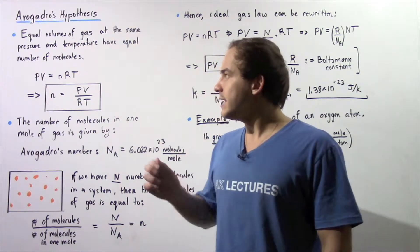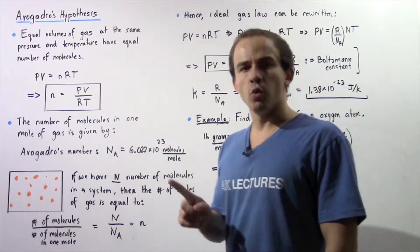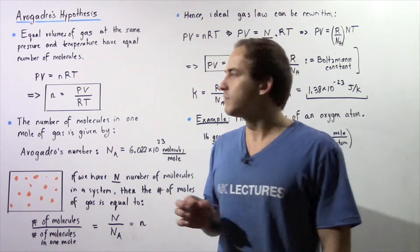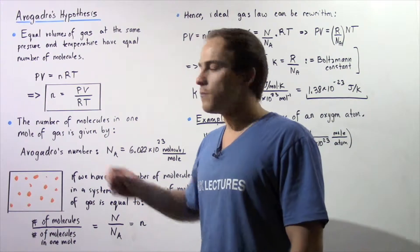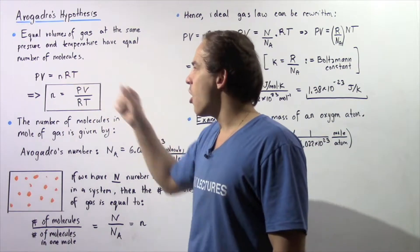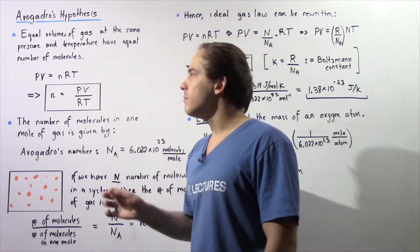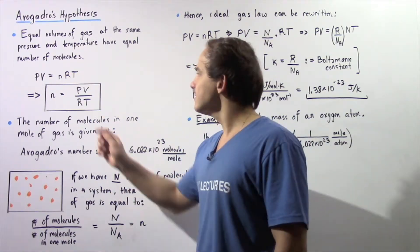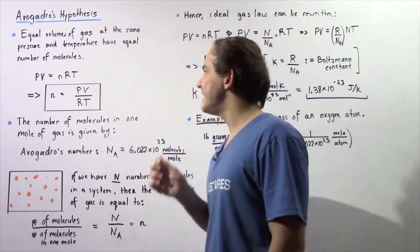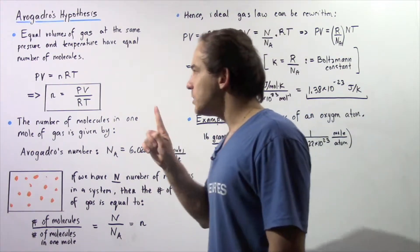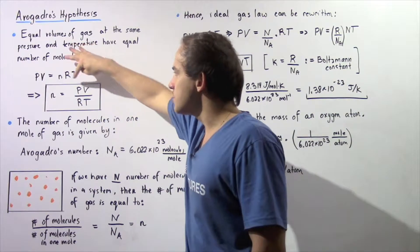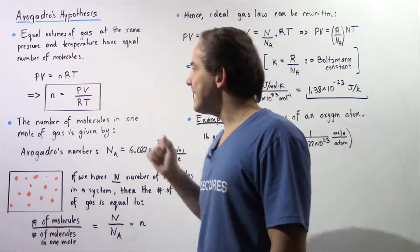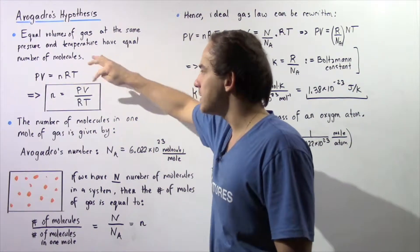This can be readily seen from the ideal gas law, which states that the product of the pressure and the volume of our system of gas is equal to N multiplied by R multiplied by T, where N is the number of moles, R is our universal gas constant, and T is the temperature given in Kelvin. We can rearrange this equation and solve for N, the number of moles: N is equal to PV divided by RT.